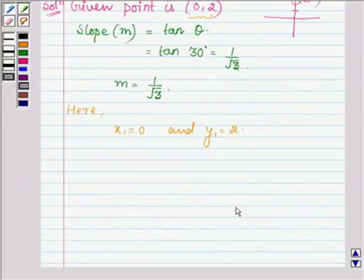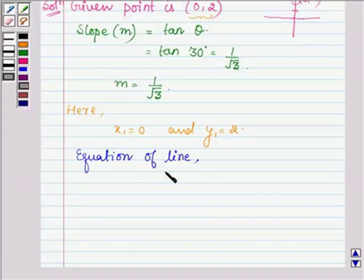Therefore, the equation of the line is y - 2 = m(x - 0).